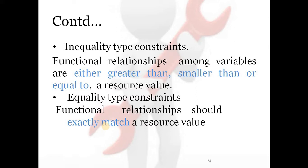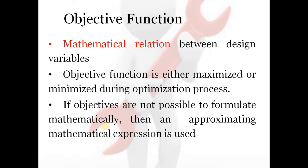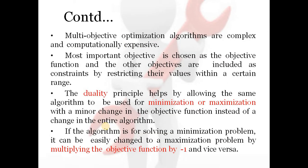The objective function is the heart of any optimization problem — the main objective. This objective function has a mathematical relation between design variables and has to be maximized or minimized as mentioned earlier. If objectives are not possible to formulate mathematically, an approximate mathematical expression can be used. If there is no direct relation, an approximate relation can be considered. Based on objectives, there may be a single objective problem or a multi-objective problem.